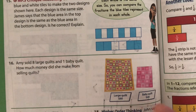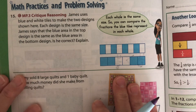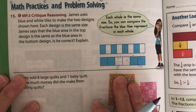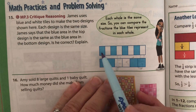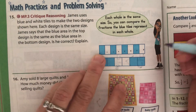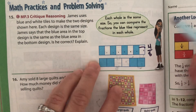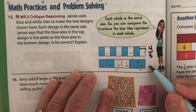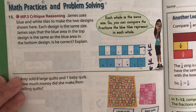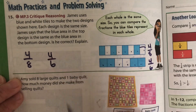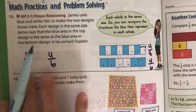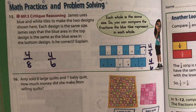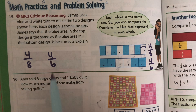James uses blue and white tiles to make two designs shown here. Each design is the same size. James says the blue area in the top design is the same as the blue area in the bottom design. So the top has eight total tiles with four blue — that's four-eighths. The bottom has six total tiles with four blue — that's four-sixths. He's basically saying four-eighths is the same as four-sixths because you have four sections colored. Is that true? No, it is not true, because the sixths are bigger pieces.